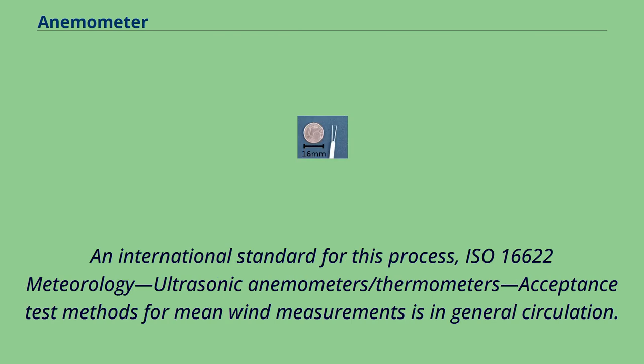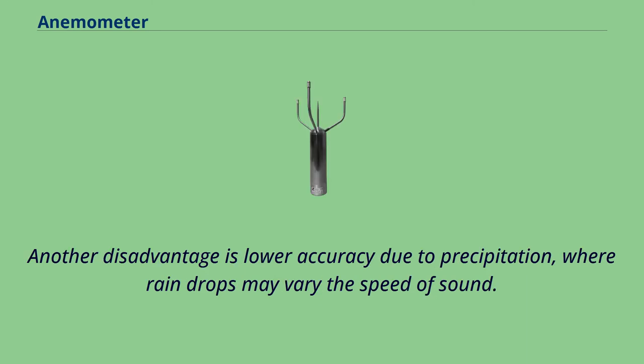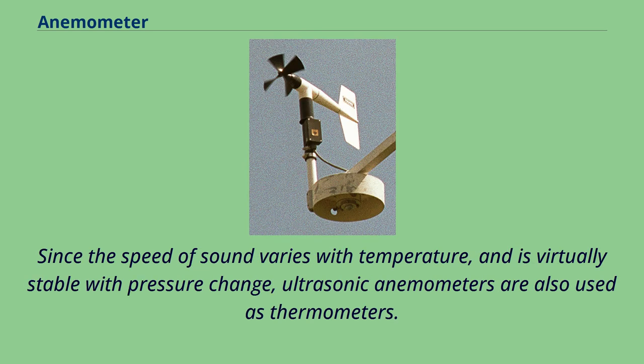An international standard for this process, ISO 16622 Meteorology - Ultrasonic anemometers/thermometers - Acceptance test methods for mean wind measurements is in general circulation. Another disadvantage is lower accuracy due to precipitation, where rain drops may vary the speed of sound. Since the speed of sound varies with temperature, and is virtually stable with pressure change, ultrasonic anemometers are also used as thermometers.